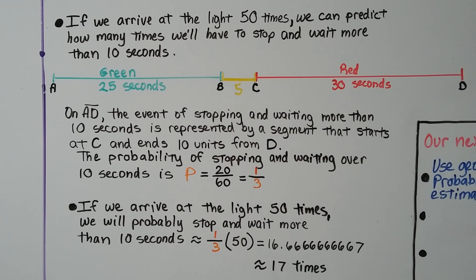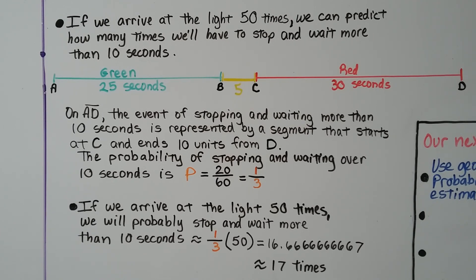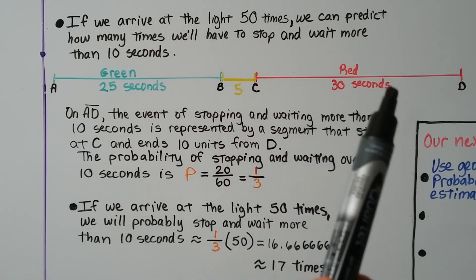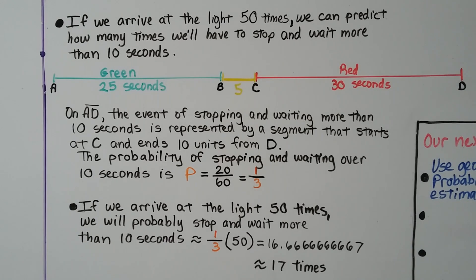If we arrive at the light 50 times, we can predict how many times we'll have to stop and wait more than 10 seconds. The event of stopping and waiting more than 10 seconds is represented by a segment starting at C ending 10 units from D, giving us 20 seconds. The probability is 20 over 60, which is 1 third. So 1 third times 50 is approximately 17 times.